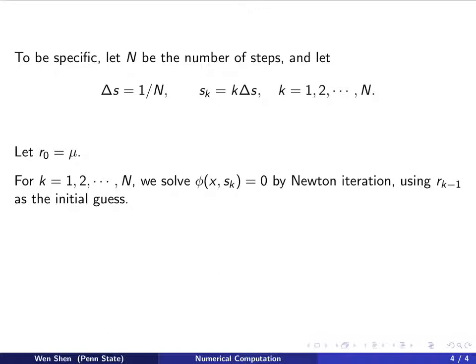So by continuation, rk minus 1 should be very close to rk, so this would be an excellent choice for initial guess. And Newton iterations should converge in a very few steps.